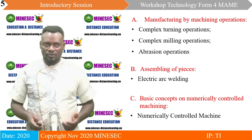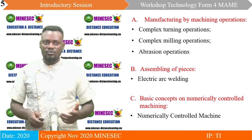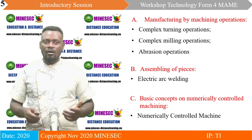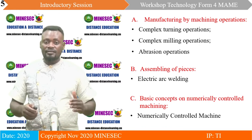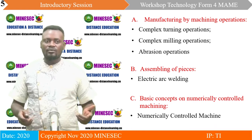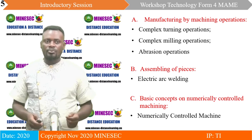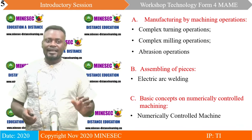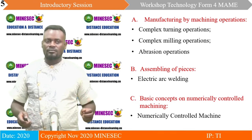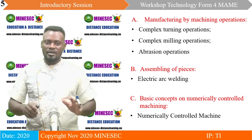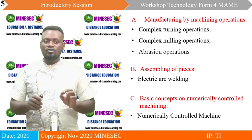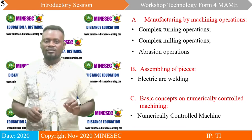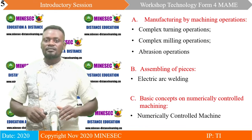Under manufacturing by machining operations, we have three subtopics. The first is complex turning operations on the lathe machine. The second is complex milling operations — those operations that are a bit more complex than the simple ones on the milling machine. The third is abrasion operations. Under point B, assembling of pieces, we focus on electric arc welding done by fusion. Point C covers basic concepts of numerically controlled machining — the use of machines controlled by computers, where everything is input and you observe how the operating sequence proceeds.